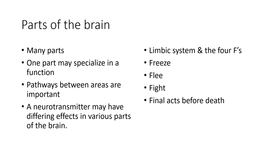In the early days of neuroscience, a lot of emphasis was placed on the various parts of the brain and learning those parts. One part may specialize in a particular function — such as the prefrontal cortex which specializes in executive function. But we've also learned that the pathways between the various parts of the brain are very important. A neurotransmitter may have differing effects in various parts of the brain.